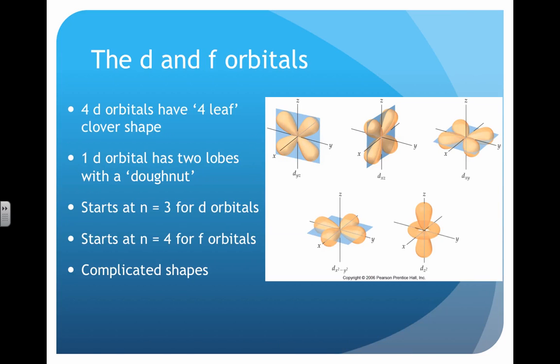There are d and f orbitals as well. And you can see the shapes getting more and more complicated. D orbitals tend to have a four-leaf clover shape as you see on the right with one donut shape with two lobes coming out of it. We don't see d orbitals until when n equals three, the third quantum level. And then f doesn't show up until the fourth level.